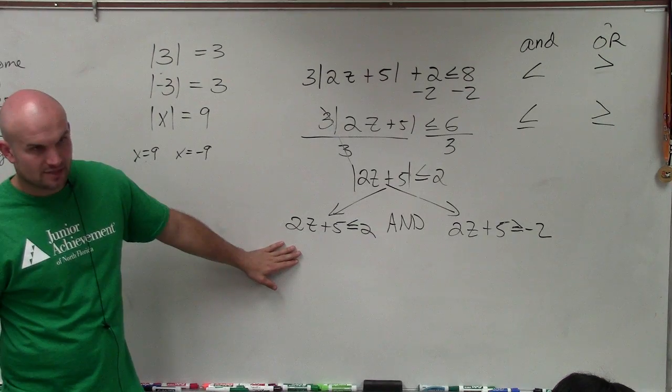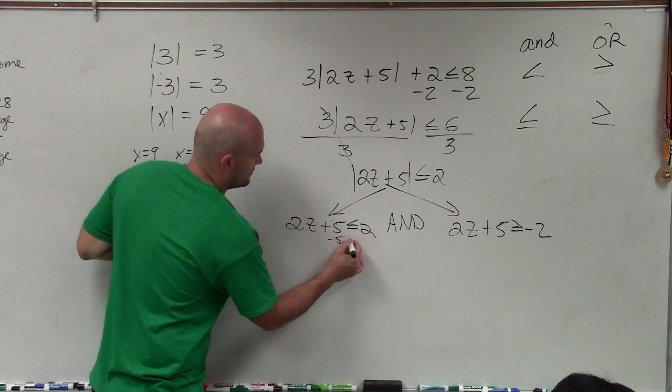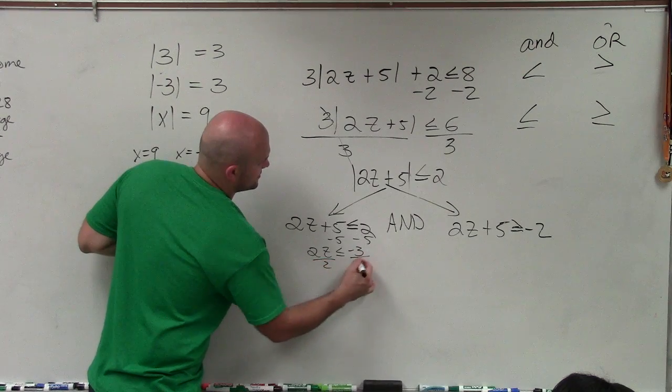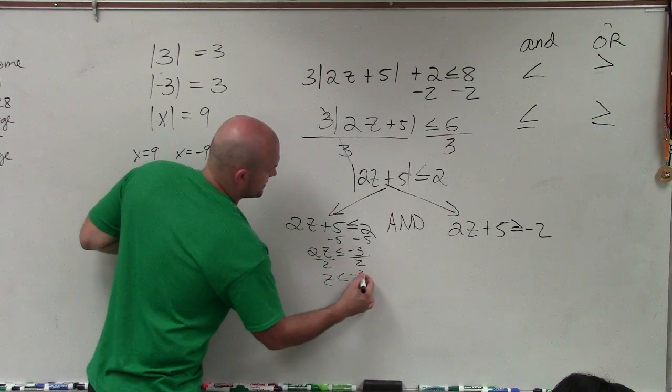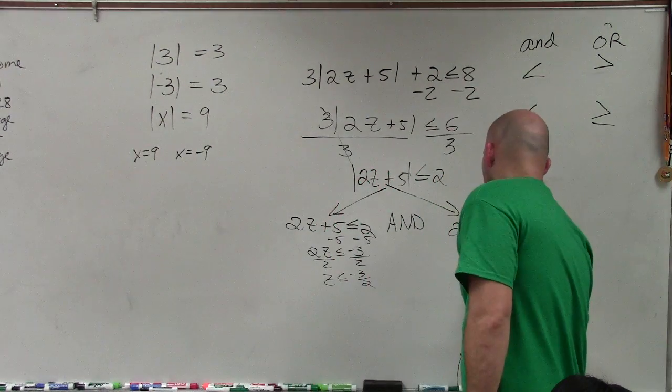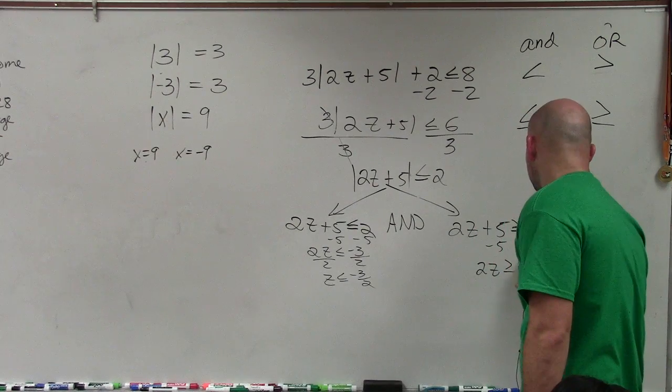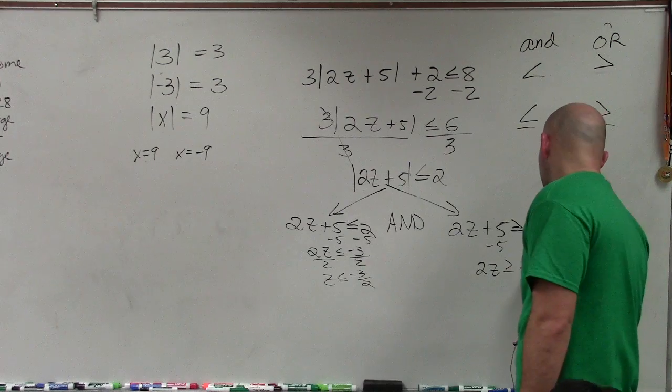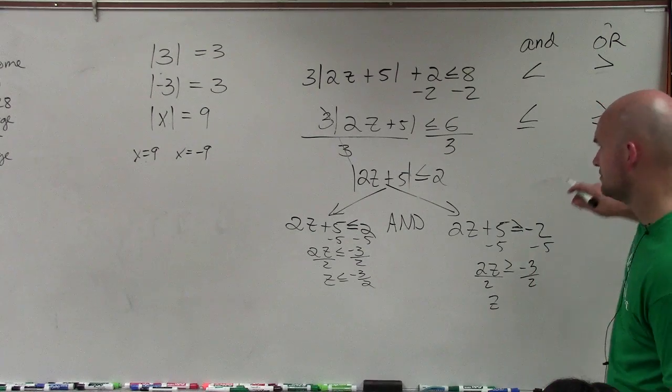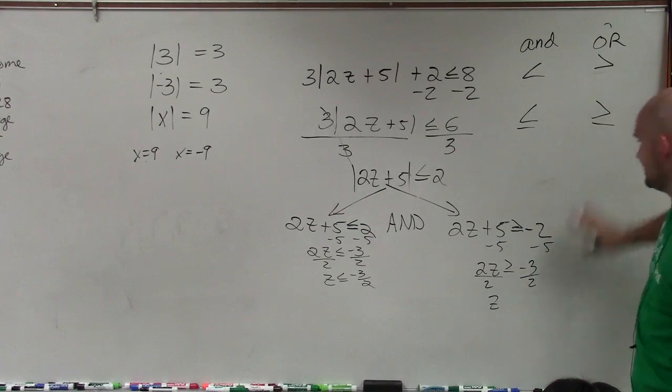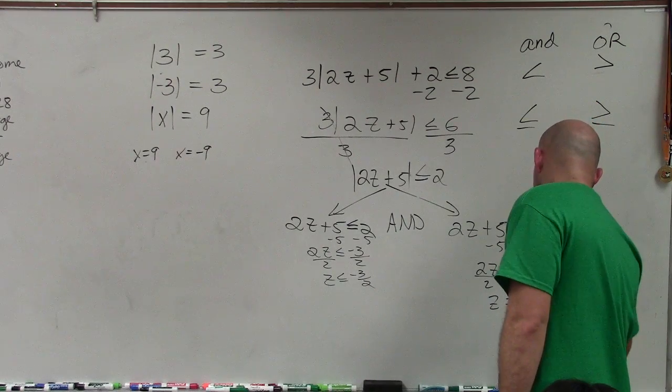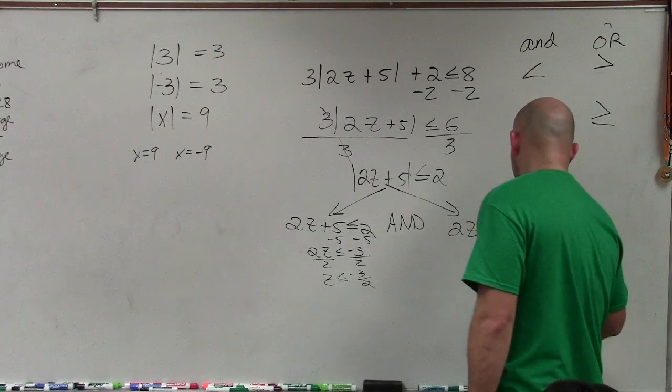Now, is it okay if you guys solve for these? Yeah. So we can solve. So 2z is less than or equal to negative 3, divide by 2, divide by 2, z is less than or equal to negative 3 halves. So over here, minus 5, minus 5, 2z is greater than or equal to minus 5. So that'd be negative 3, divide by 2, divide by 2. Wait a minute, what did I do wrong? Oh, it's negative 7. No wonder.